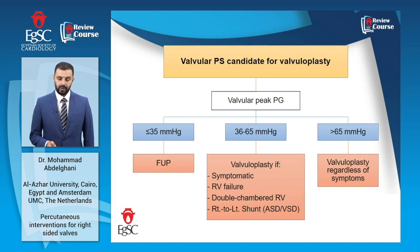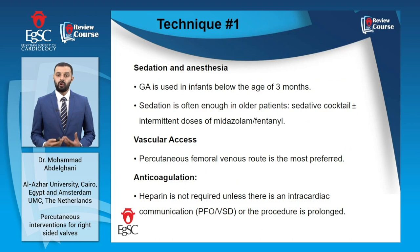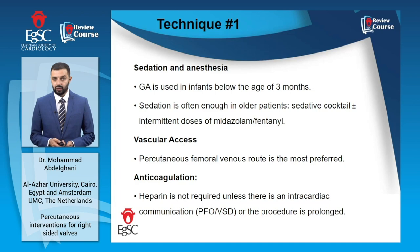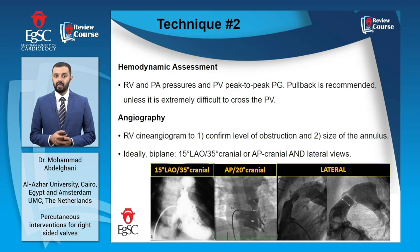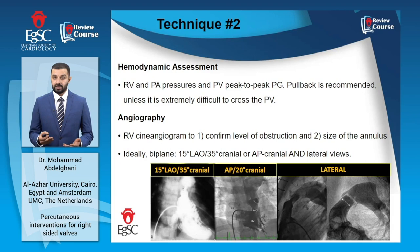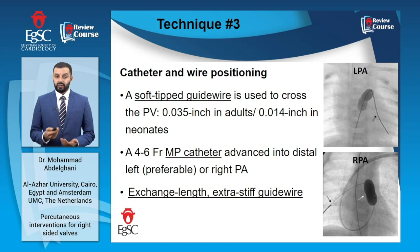Technically speaking, the procedure is straightforward in most cases. Sedation is enough in older patients, but small infants usually need general anesthesia. Vascular access is typically percutaneous femoral venous route, and anticoagulation is not routine during the procedure. Hemodynamic assessment is the first step, and a pressure pullback from the pulmonary artery into the RV is recommended when possible. RV angiogram should then be performed to confirm the level of obstruction and to size the annulus, which is very important to decide the balloon size. A soft-tipped guidewire is used to cross the valve, a catheter is placed in one of the pulmonary artery branches, and finally an exchange-length extra-stiff guidewire is parked in one of the pulmonary artery branches.